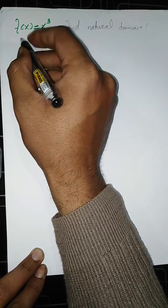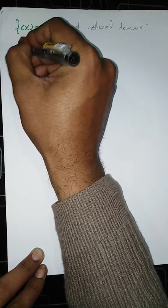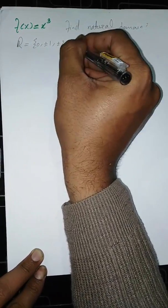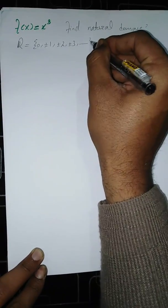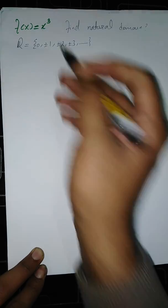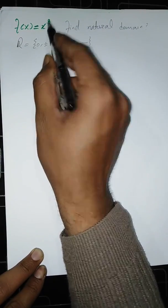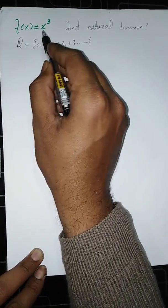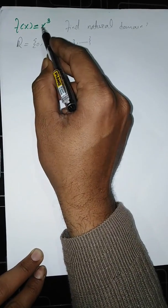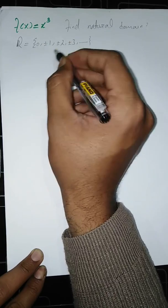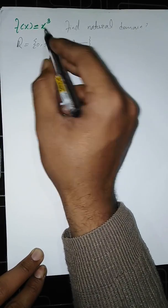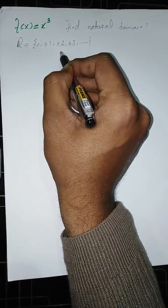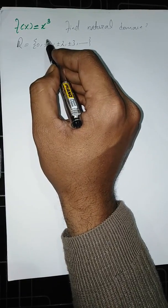We know the set of real numbers includes 0, plus or minus 1, plus or minus 2, plus or minus 3, and so on. For the function f of x equals x cubed, there is no value in the set of real numbers that makes this function undefined, because for every input value there is a defined output. For example, if we put 1, our output is 1; if we put 2, our output is 8; if we put 3, our output is 27.